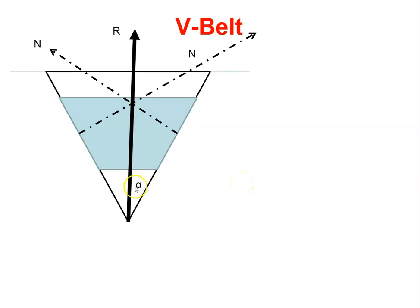Now, if I take this angle here to be alpha, that's half the V-belt angle. So you might be told the V-belt has an angle of 40 degrees, but then alpha here is half that, it's 20 degrees.